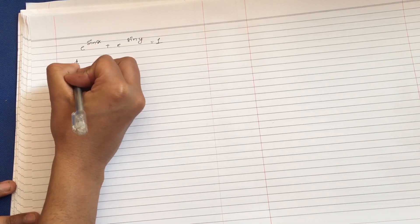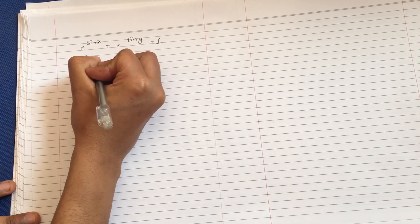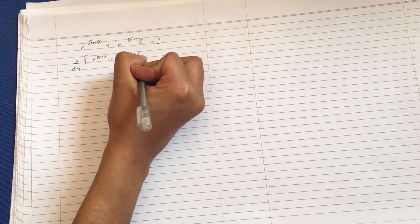As usual, I am differentiating on both sides. So, differentiate e to the power sin x plus e to the power sin y, and differentiation of 1.